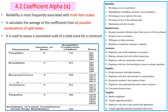SERVQUAL has five dimensions. For example, tangibility has four items and a reliability coefficient of 0.72. The reliability dimension has five items and a reliability coefficient of 0.83. All the items under each dimension measure that specific dimension, and all possible combinations of split halves provide the coefficient alpha — for example, 0.83.